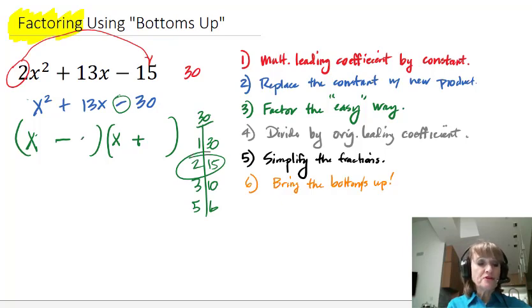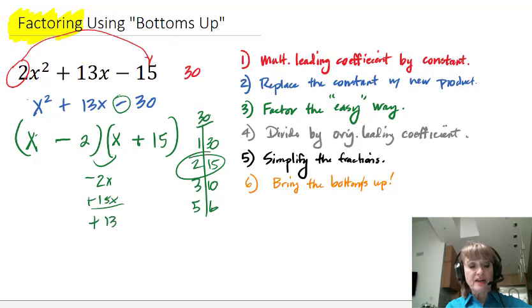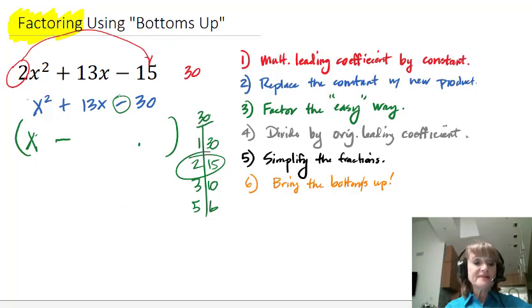Now if I put the 2 here and the 15 here, what's going to happen is I'm going to have a negative 2x and a plus 15x, and that's going to give me a positive 13x. So that is the correct way to do it. But watch the other option because it does matter.